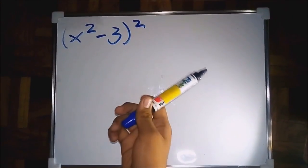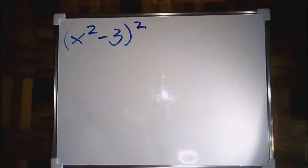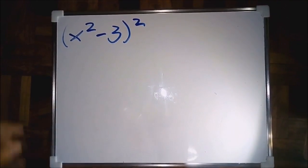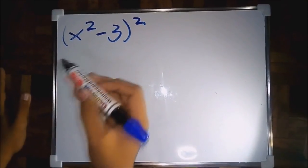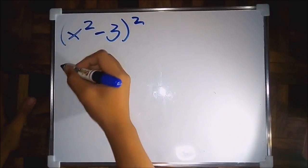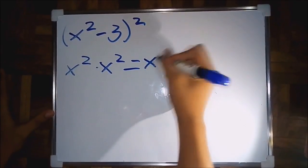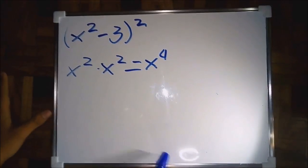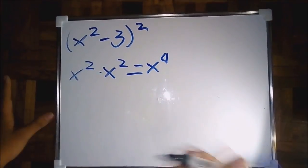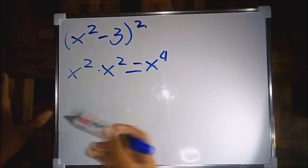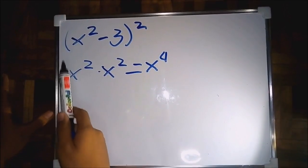Second step is let us multiply the first term, which is x squared, by itself. The answer is x to the fourth power. The third step is let us multiply the first term to the second term and multiply the product by 2.